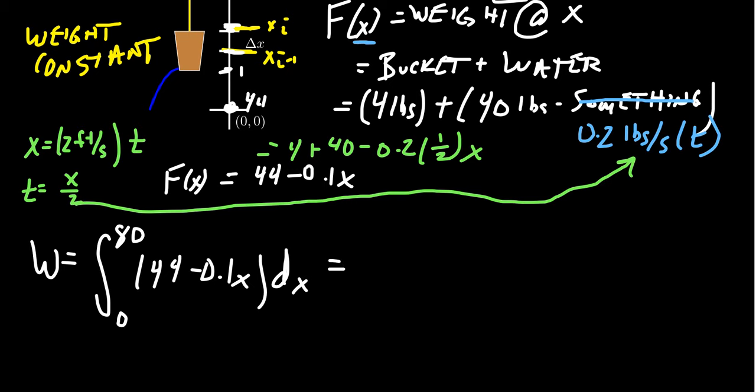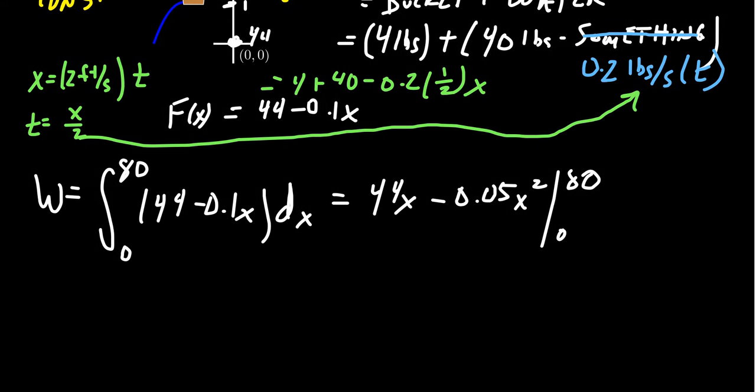And so now we just have to compute the antiderivative from here. The antiderivative of 44 minus 0.1x would be 44x minus 0.05x squared from 0 to 80. Plugging in 0 makes it disappear, so we'll just plug in the 80. And we end up with 44 times 80 minus 0.05 times 80 squared.